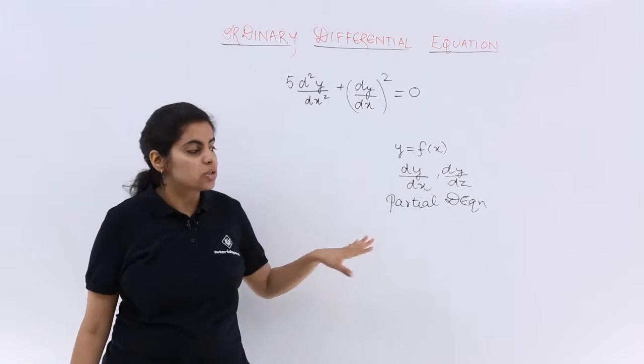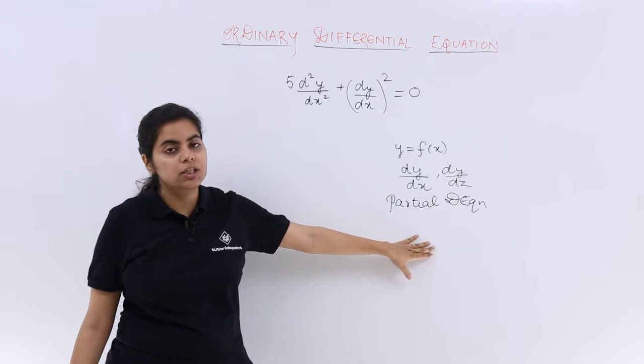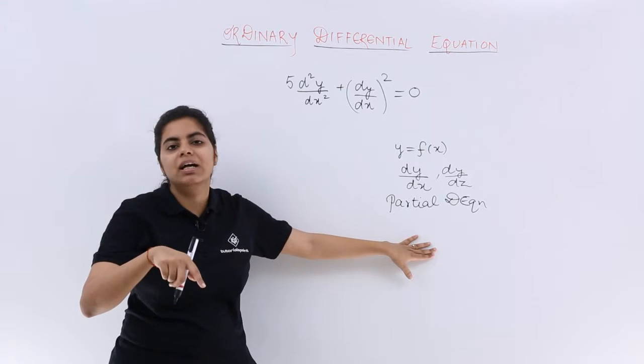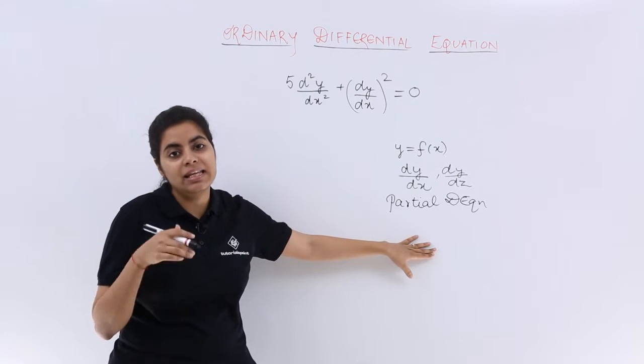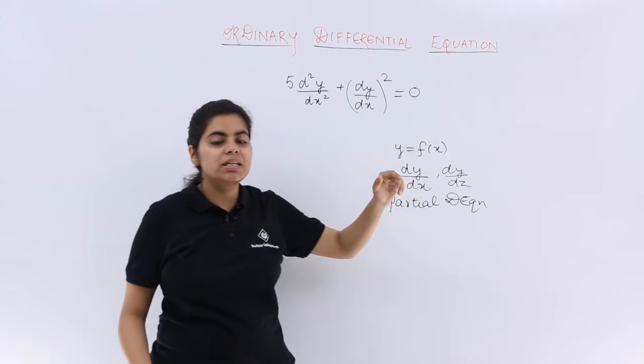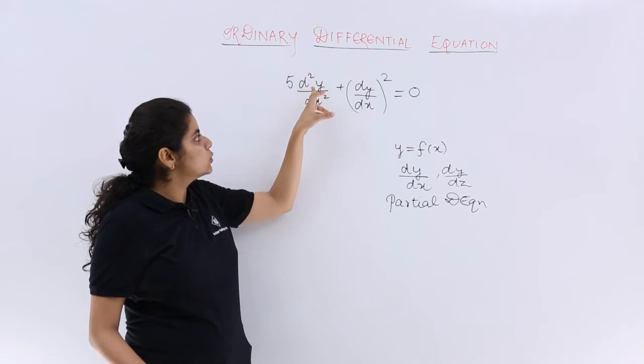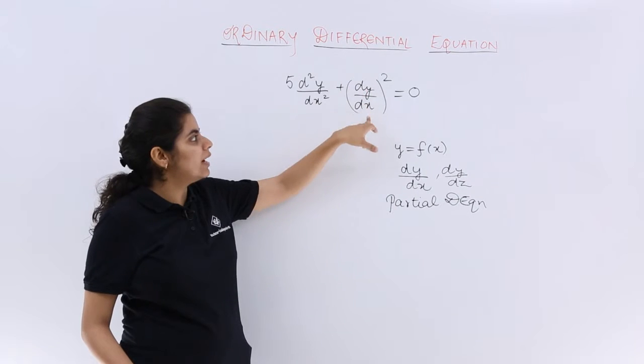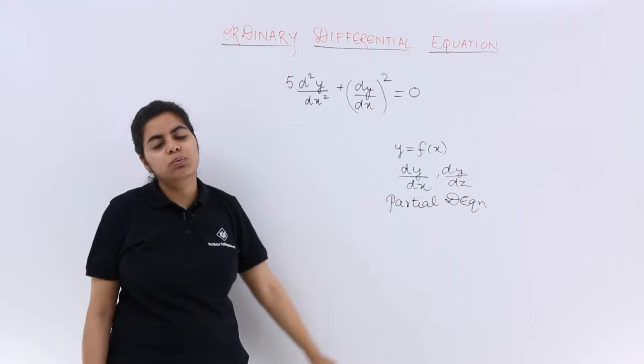That is a case of partial differential equation, but we are concerned in this video and in this chapter basically with only ordinary differential equations. Now see this example: 5 d²y by dx² plus dy by dx whole square equals 0.